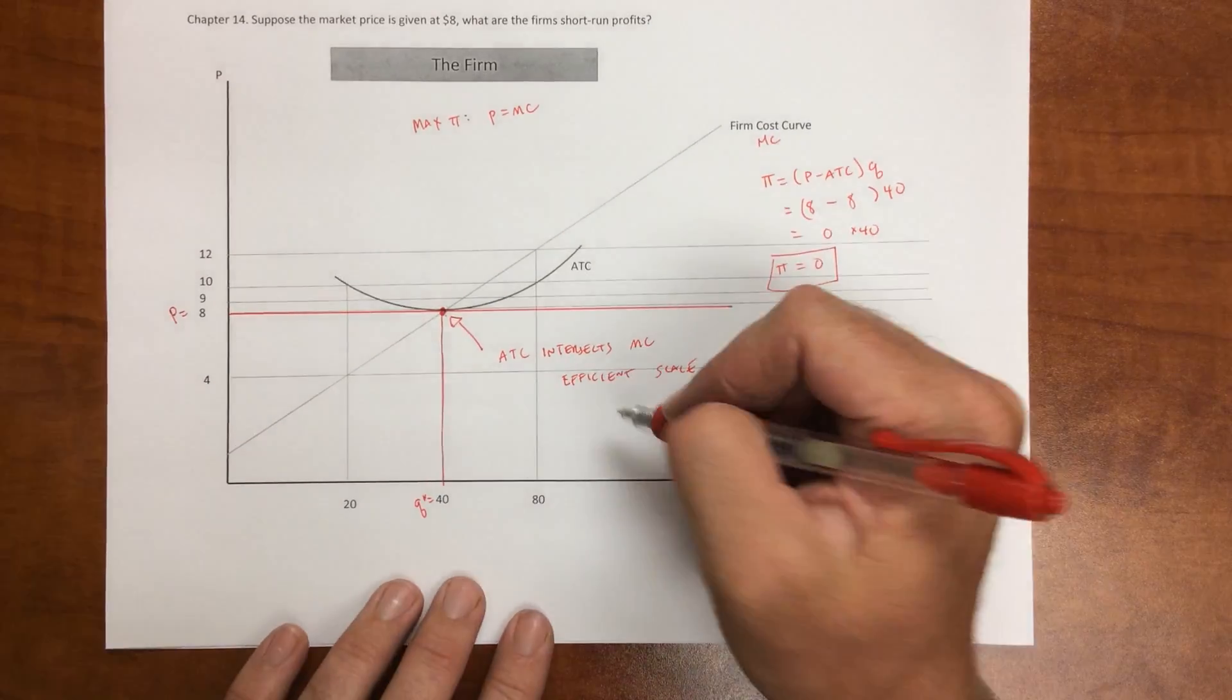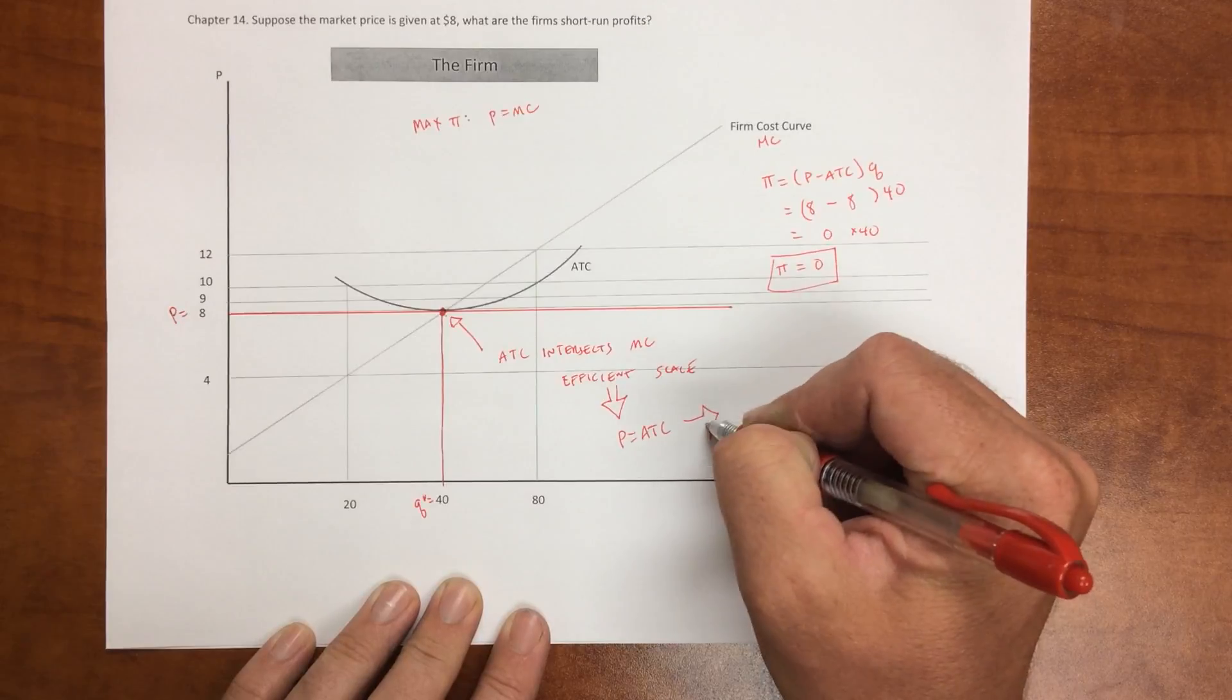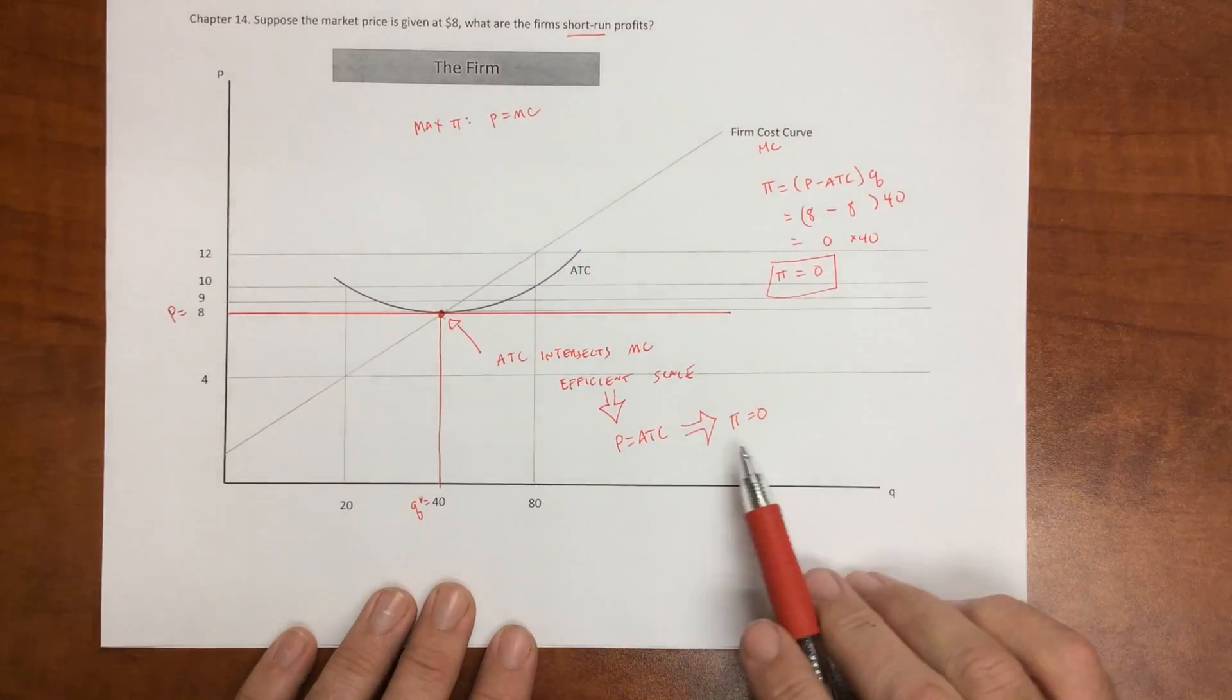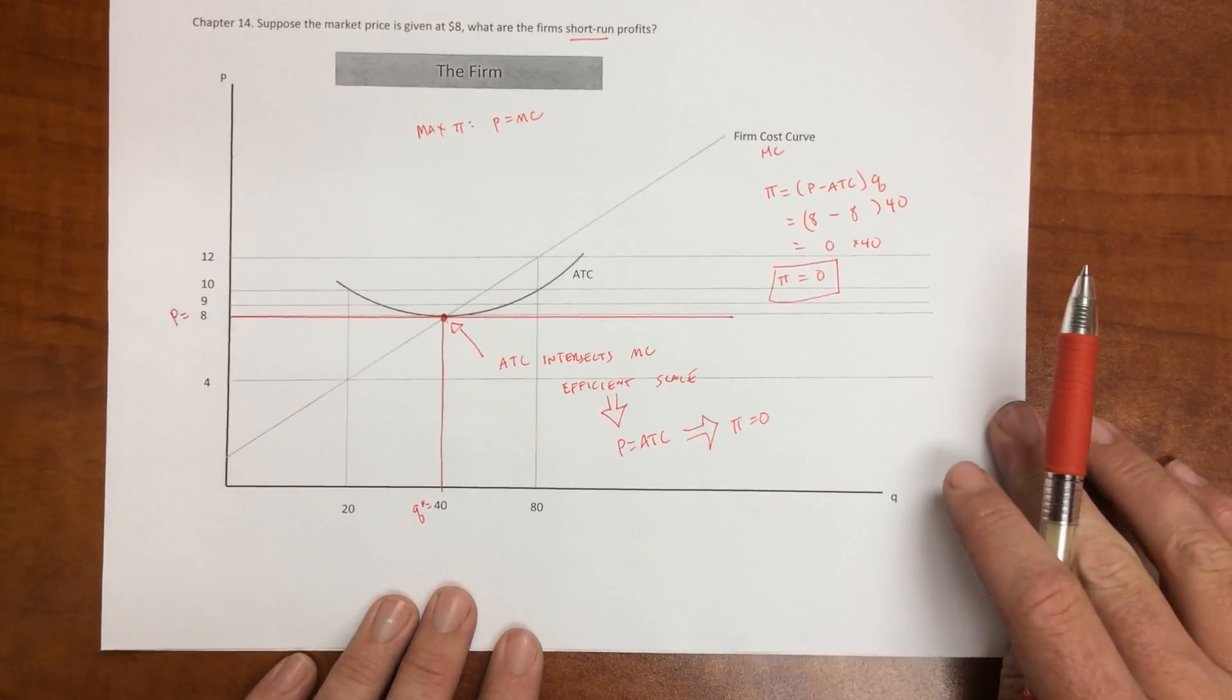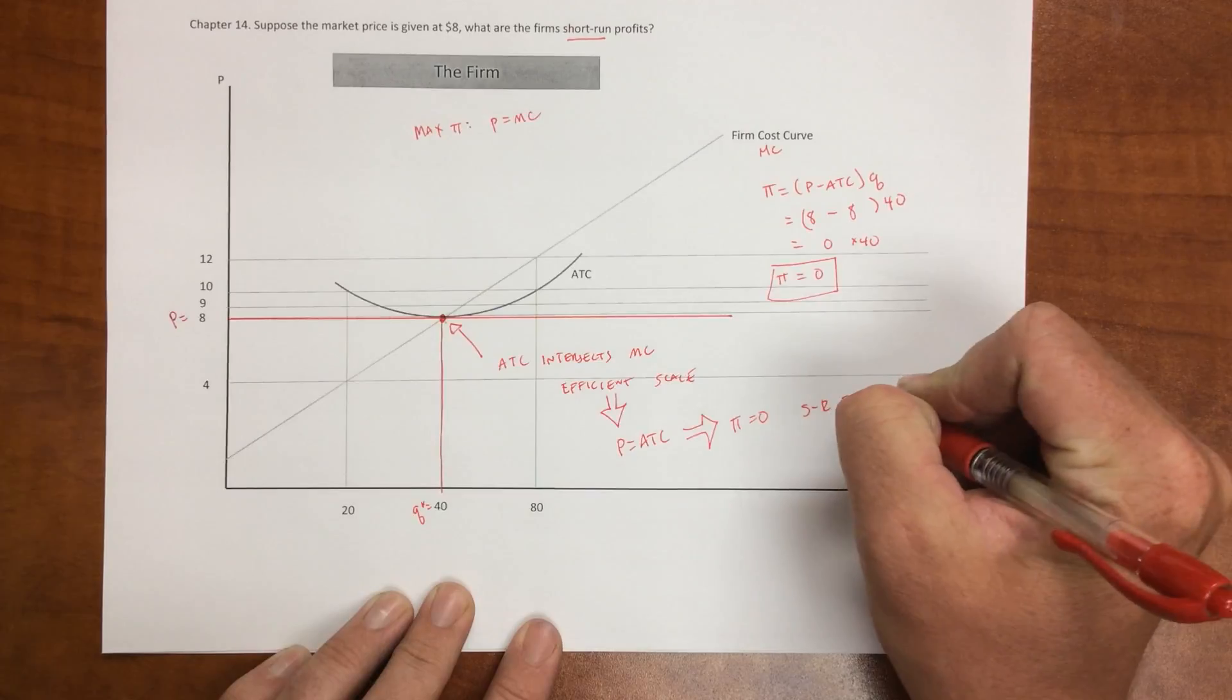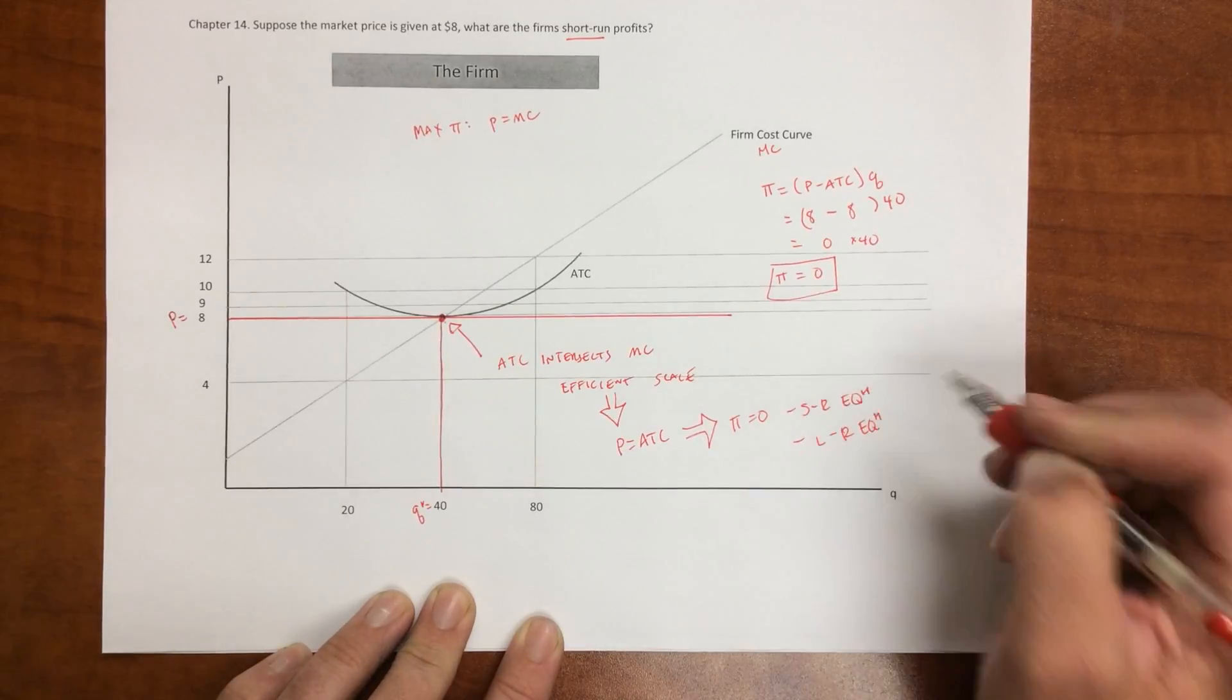Then that's the case when price is equal to average total cost, which means that profits are zero. And so while this is the short-run profits, because profits are zero, the market's not going to respond with entry and exit. And so when profits are zero, this is the short-run equilibrium, but it's also the long-run equilibrium.